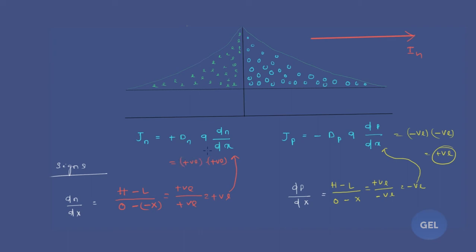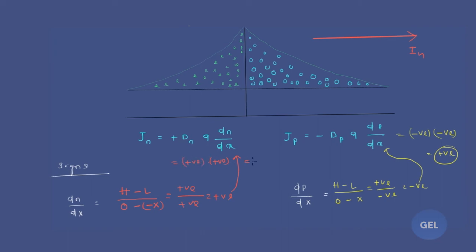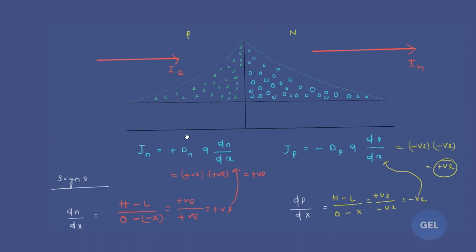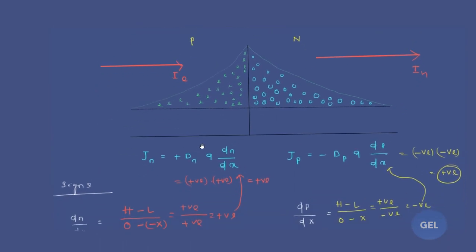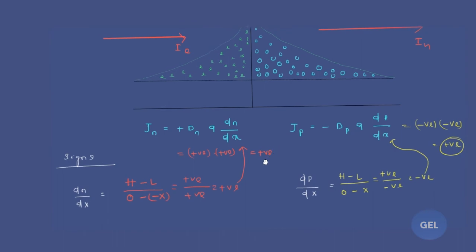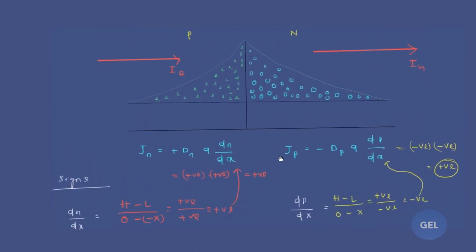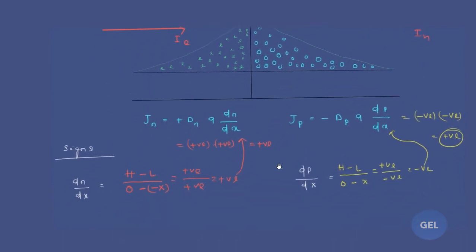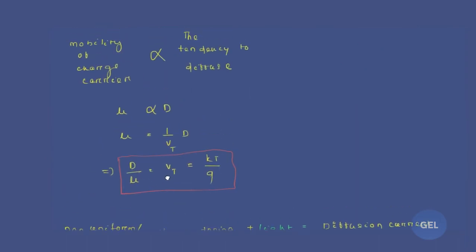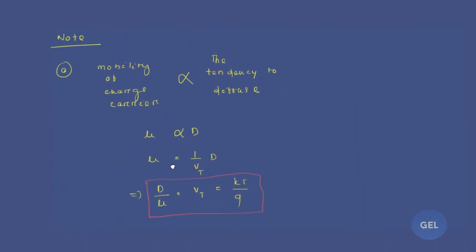Overall we are getting a positive value, so the electron current direction will also be in the positive direction. Now if you get any question on diffusion current direction, you are going to answer it correctly. Moving on to the next slide, there are a couple of important note points.